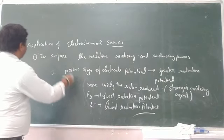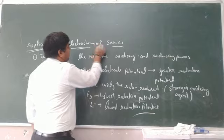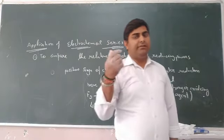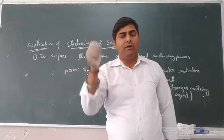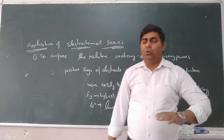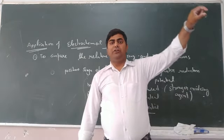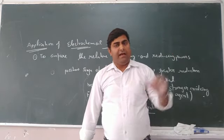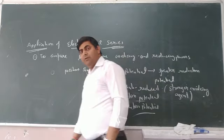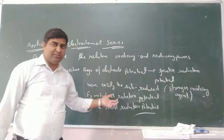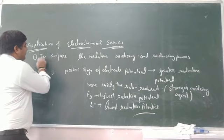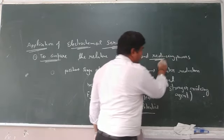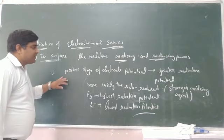Now we are going to discuss the applications of electrochemical series. The electrodes are arranged in increasing order of reduction potential, meaning those metals at the top of the electrochemical series have the least reduction potential, while those at the bottom are the strongest and have the highest reduction potential.